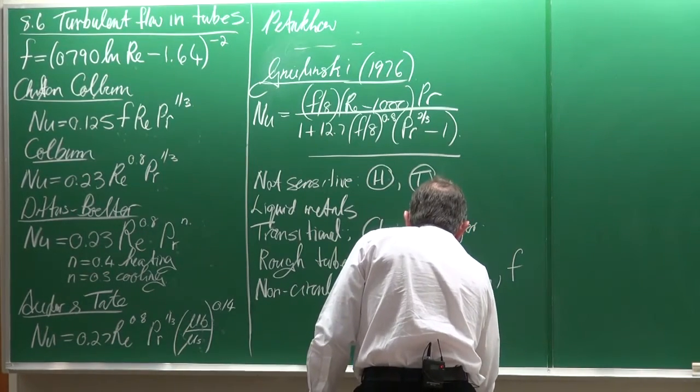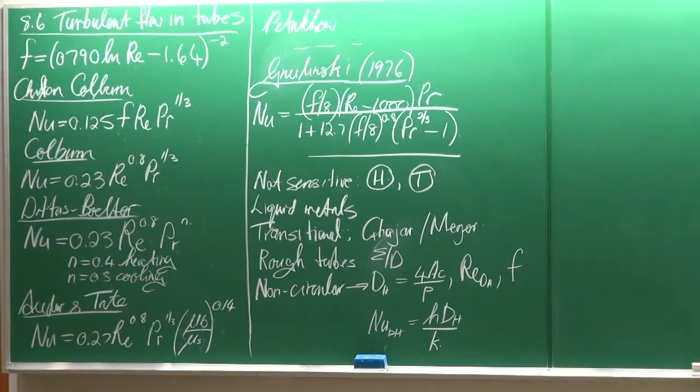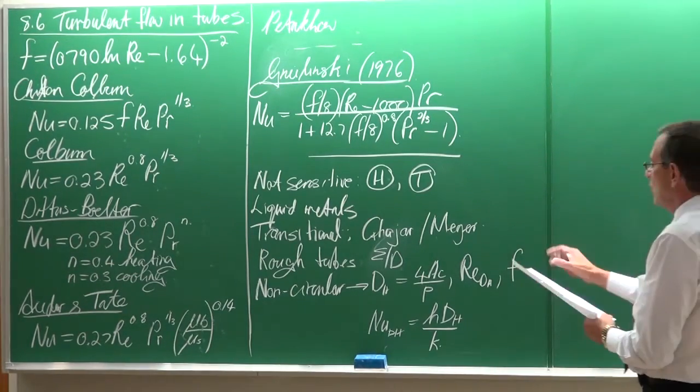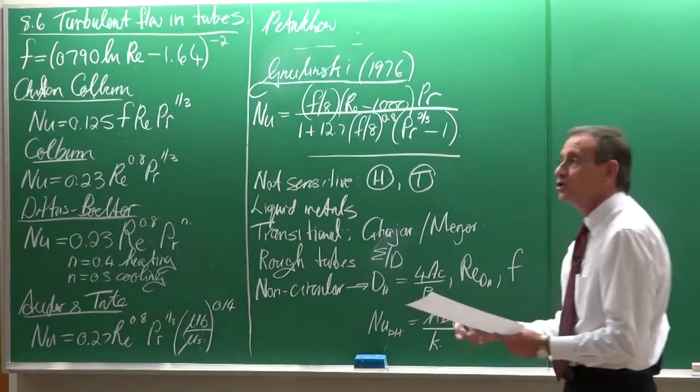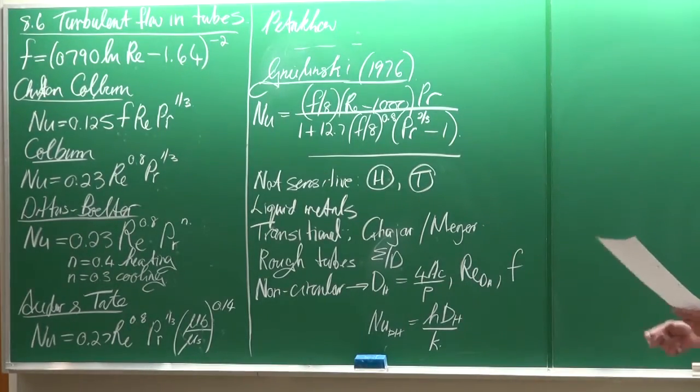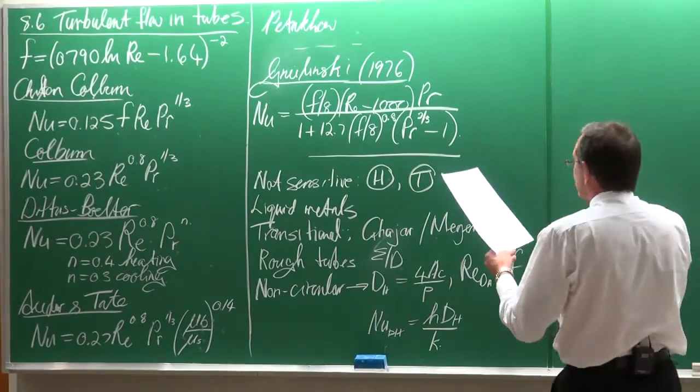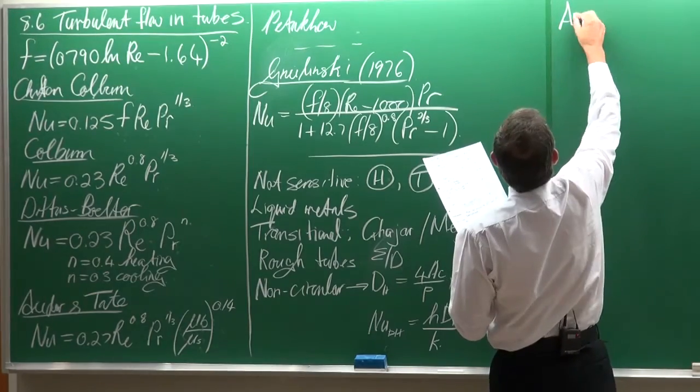The diameter, the hydraulic diameter, divided by k. So that is what you're going to do if you do not have good data on a specific non-circular tube, and there's no equations available.